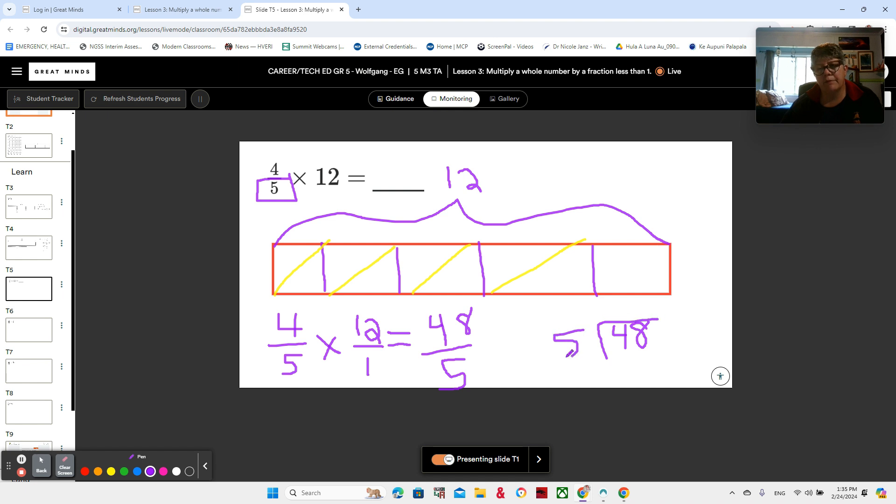48 divided by five. Five times eight is 40. Five times nine is 45. I think that's the biggest we can get without going over. And then we're going to subtract. Eight minus five is three. And that leaves us with nine and three fifths. So nine and three fifths. So does it make sense that four fifths of 12 is nine and three fifths? Well, yes, because it's less than 12. But it's most of 12.